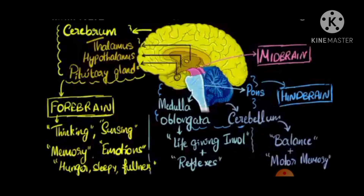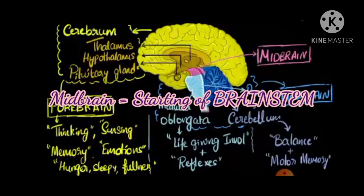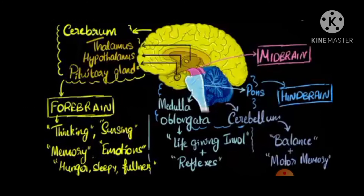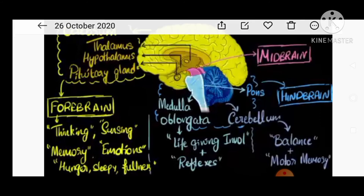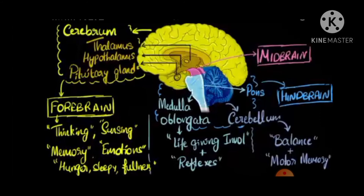Now let us discuss about the midbrain. The midbrain is the beginning portion of the brain stem and it connects the forebrain to the spinal cord. Its functions include certain involuntary actions like vision, hearing, and motor control.